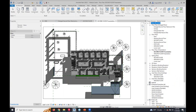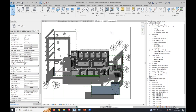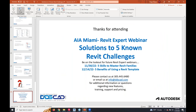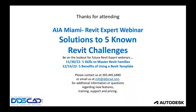The best organization really depends on what the architectural firm wants to do. If they want to do enlarged plans, I'd suggest the workable and printable approach — this example with floor plans, enlarged plans, regular plans, and presentation plans going down is a very nice one. Upcoming webinars: on November 30th, Five Skills to Master Revit Families, and on December 14th, Five Benefits of Using a Revit Template. Look out for registration links on those.